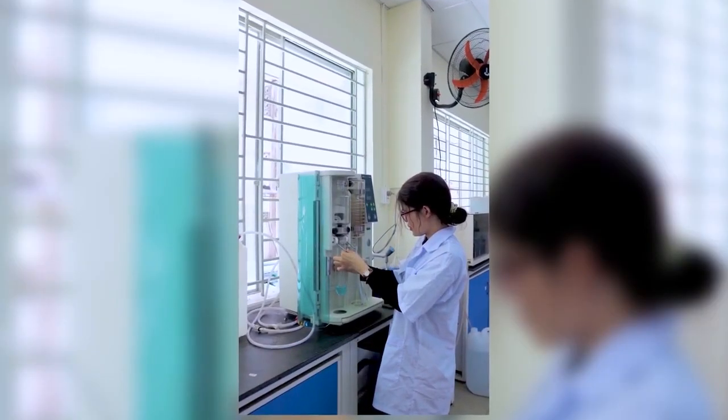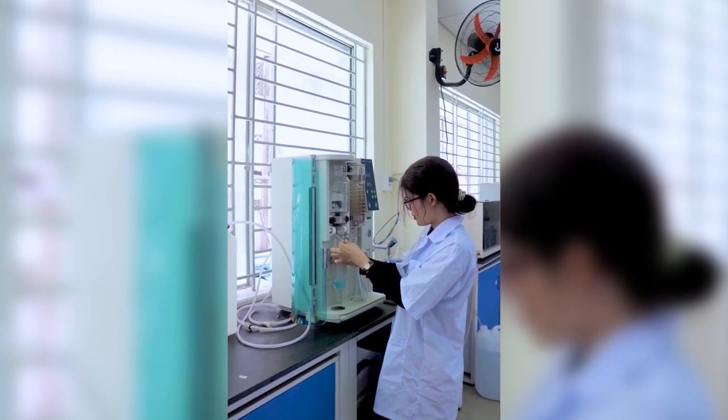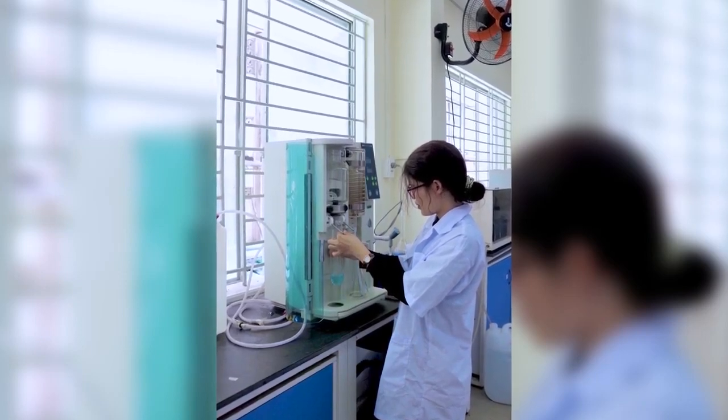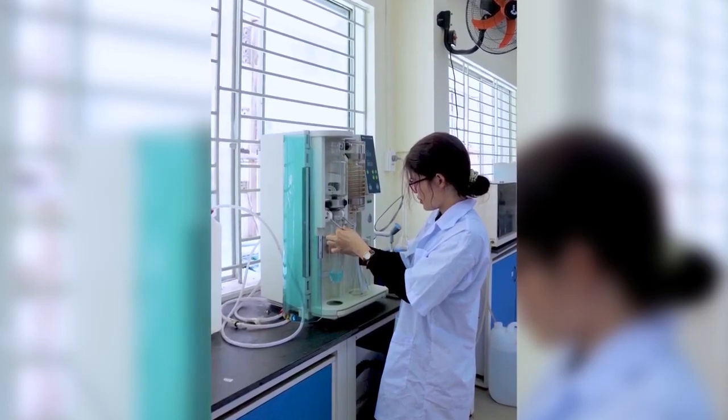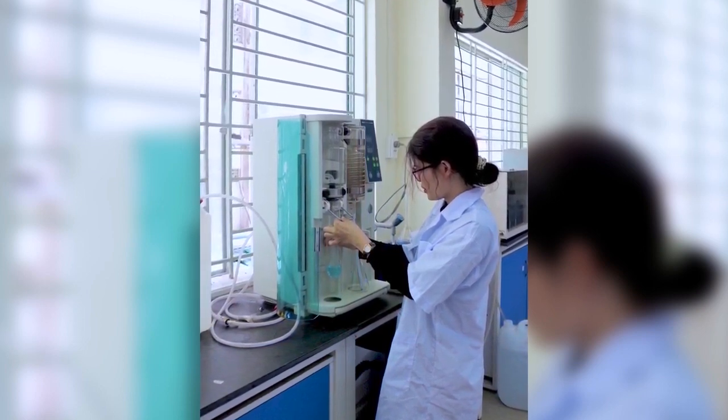The distillation unit K355 Buchi and infrared digestion systems are used to analyze ammonium and total nitrogen in soil, water, food, and fertilizer samples. This is a modern apparatus which ensures safety for users as well as accurate results.